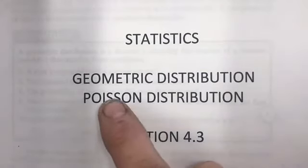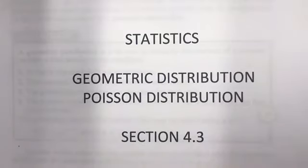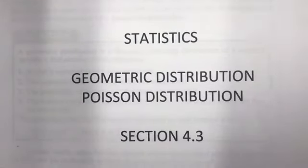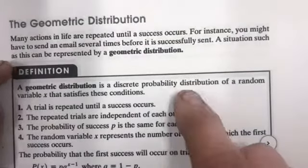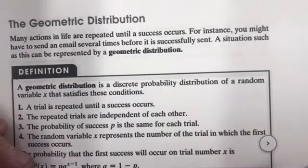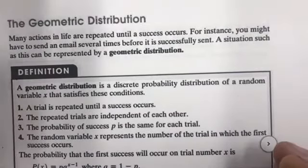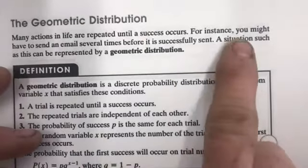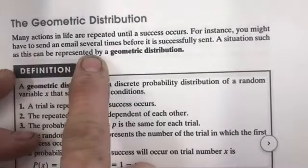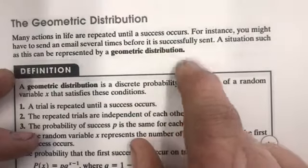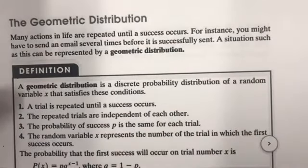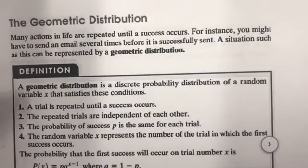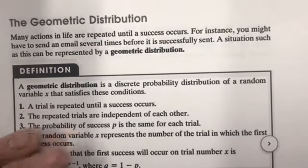In statistics today we're looking at geometric distribution and Poisson distribution, section 4.3. The geometric distribution is pretty much this: you do something over and over until you have a success. For instance, you might have to send an email several times before it's successfully sent, or you're shooting free throws and you keep shooting until you hit one.